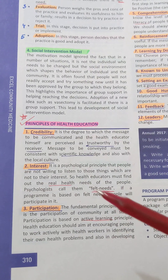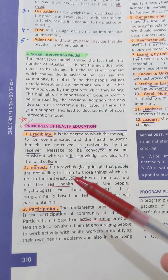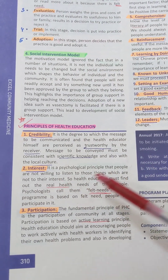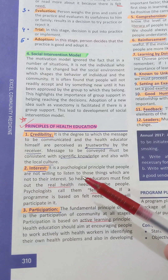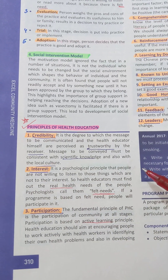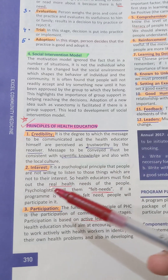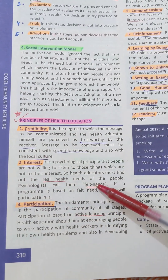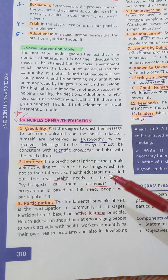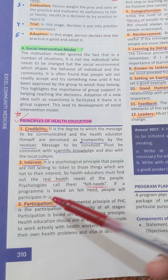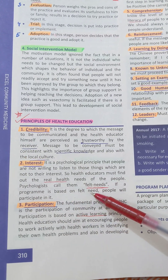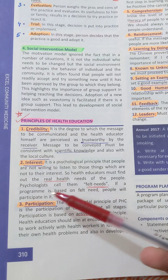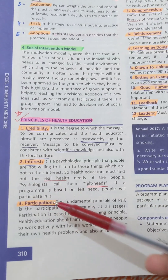In trust, it is a psychological principle that people are not willing to listen to those things which are not of their interest. So health educators must find out the real health needs of the people — what psychologists call felt needs. If a program is based on the felt needs of the people, the people will participate in it.